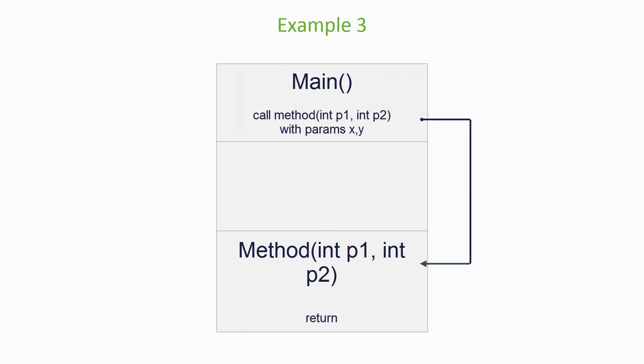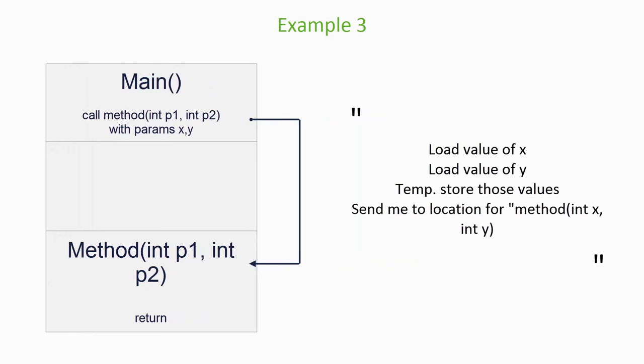The second example is more complicated. Now our guy at the top of the cliff must shout down: I want you to load the value of x. Now load the value of y. Now temporarily store those values, but not in registers because I want to use those later. Finally, move me to the memory location for method xyz.